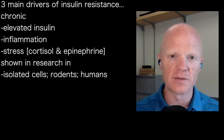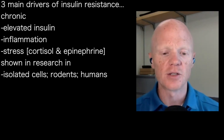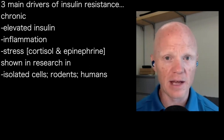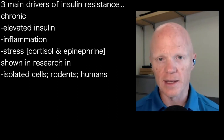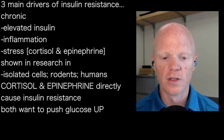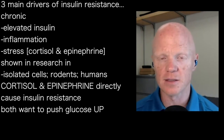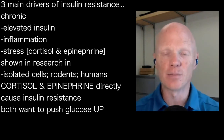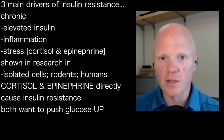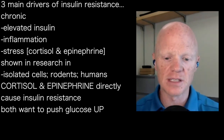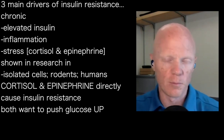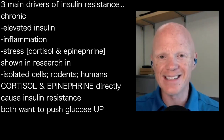We have proof of the relevance of these in all biomedical models. With stress, the key hormones are cortisol and epinephrine — also called adrenaline, they're the same thing. That is where the rubber meets the road. When we say stress can cause insulin resistance, we mean that the prototypical stress hormones cortisol and epinephrine cause the body to become insulin resistant quite directly. They belong to a family of hormones called insulin antagonists.